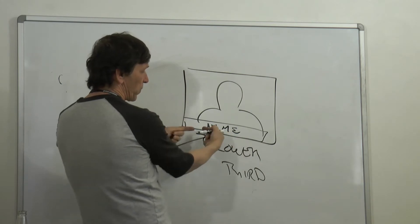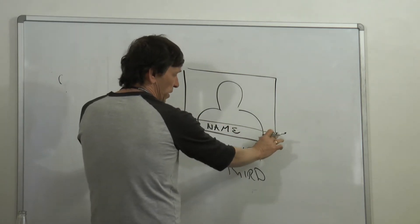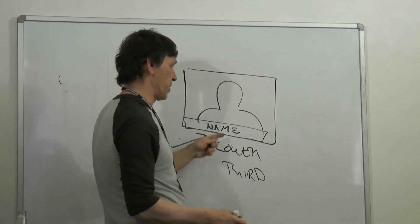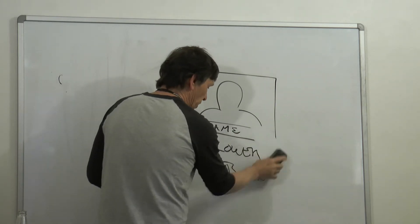So when somebody asks for a lower third, that's what they're asking for - a piece of text across the bottom with some kind of a graphic separator to separate them from the background, make it easier to read behind them.